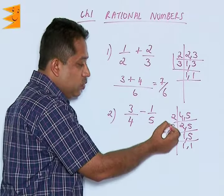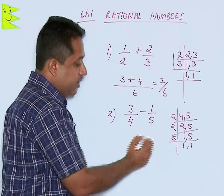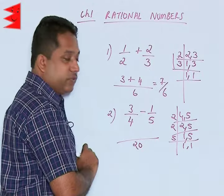You find the factors are 2 into 2 into 5. So 2 into 2 into 5 becomes 4 into 5, that is 20. So we are getting the LCM as 20.